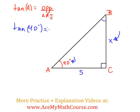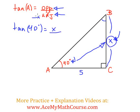So tangent of 40 degrees is equal to the opposite over the adjacent. The opposite side to 40 degrees is this side over here, side BC, so I'm going to put an x over there and we have that over the adjacent side. The adjacent side is side AC, which measures 5.